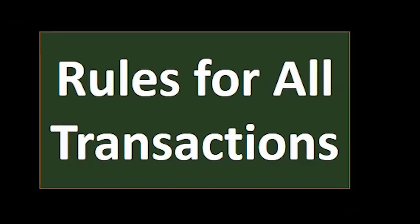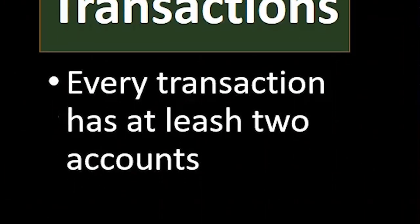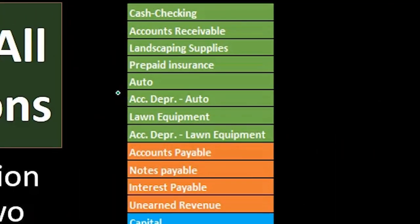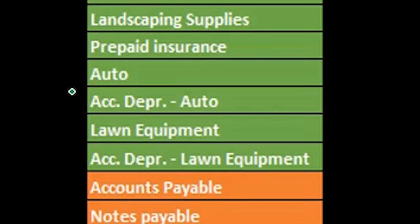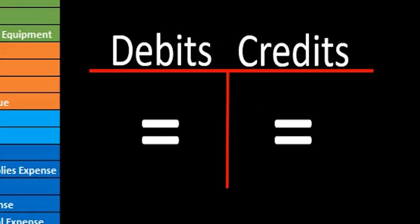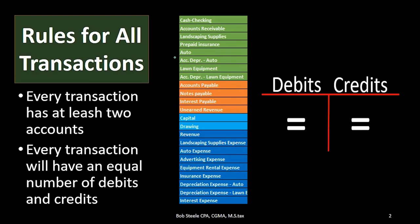The rules for every transaction, including adjusting journal entries or normal journal entries, include: every transaction has at least two accounts affected. So if this is our chart of accounts, we would need at least two of these accounts involved in every transaction, maybe more, but the minimum would be two. Why? Because we need an equal number of debits and credits in each journal entry, so each journal entry needs at least two accounts to achieve that goal.